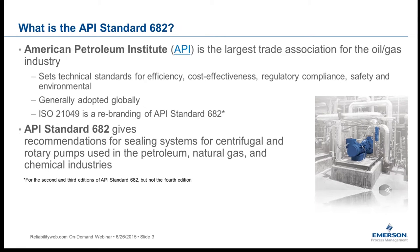So what is API Standard 682? API is the American Petroleum Institute, the largest trade association for the oil and gas industry. It's a lobbying organization headquartered in Washington, D.C., but they also provide venues for industry consultants from operating companies, vendors, and engineering contractors to meet and develop standards for all kinds of equipment found in process plants. These standards are generally adopted globally. For listeners outside the United States, ISO 21049 is a rebranding of API Standard 682.